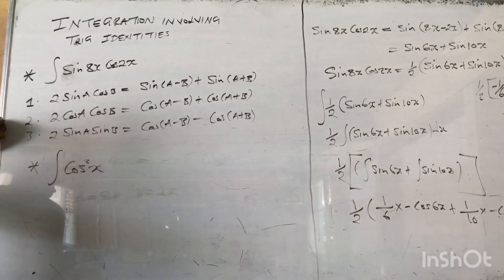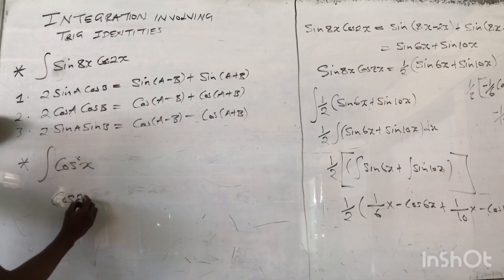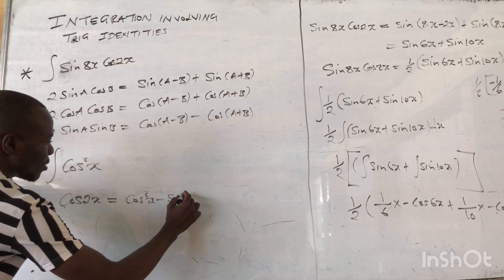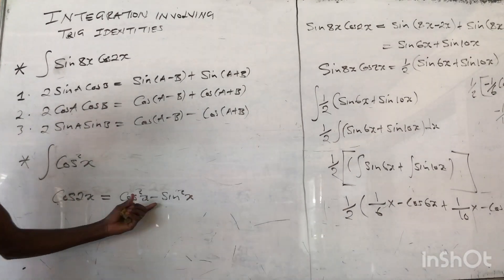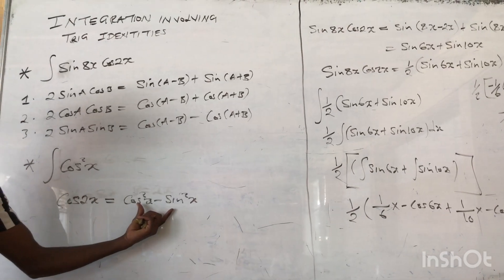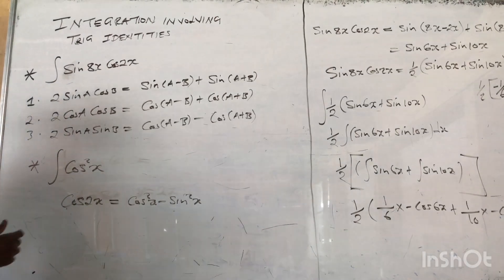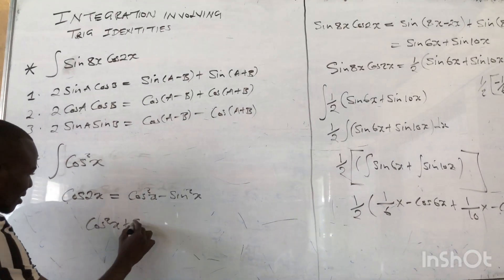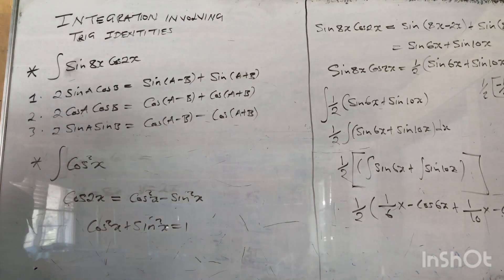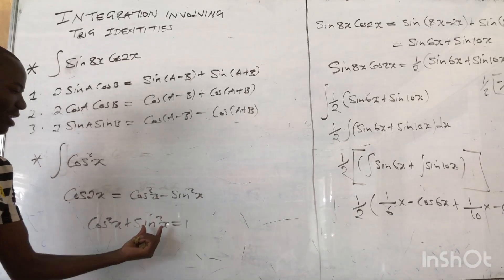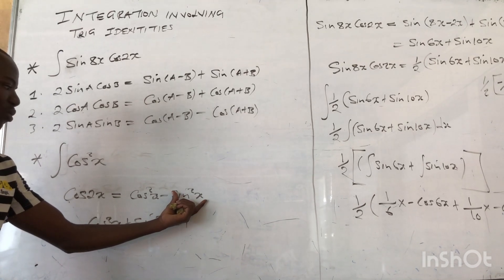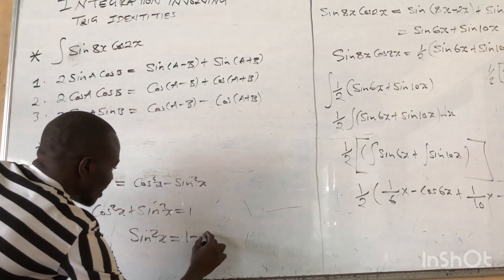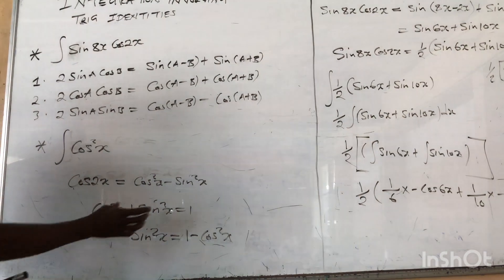From the double angle formula, we know that cos(2x) = cos²(x) - sin²(x). We also know the Pythagorean identity cos²(x) + sin²(x) = 1, so sin²(x) = 1 - cos²(x). We can substitute this into the double angle formula to find an expression for cos²(x).